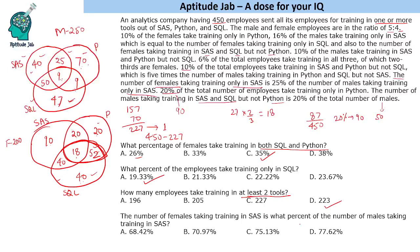The fourth question asks: the number of females taking training in SAS is what percentage of males taking training in SAS? Females in SAS includes all SAS-related regions: summing gives 88. Males in SAS regions sum to 124. So 88 divided by 124 is approximately 70.97 percent. That concludes the solution — it was straightforward, requiring careful reading of statements and filling values into the Venn diagrams.